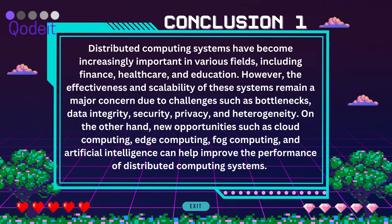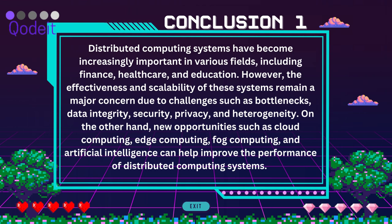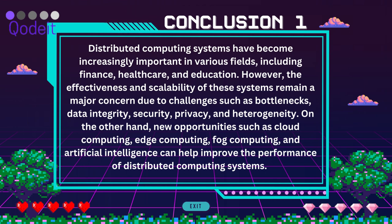Conclusion. Distributed computing systems have become increasingly important in various fields, including finance, healthcare, and education. However, the effectiveness and scalability of these systems remain a major concern due to challenges such as bottlenecks, data integrity, security, privacy, and heterogeneity. On the other hand, new opportunities such as cloud computing, edge computing, fog computing, and artificial intelligence can help improve the performance of distributed computing systems.